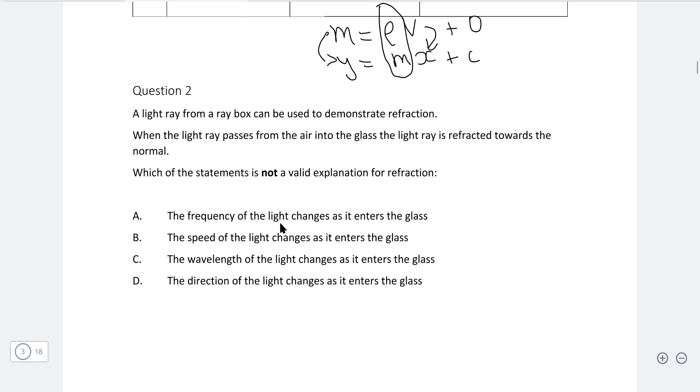So A, the frequency of the light changes as it enters the glass. Well, the first one we're quite lucky is definitely not correct. The frequency of the light always remains the same. It is the wavelength that changes, so wavelength changes during refraction but frequency is constant. So in this case A is the statement which is not valid and our correct answer.